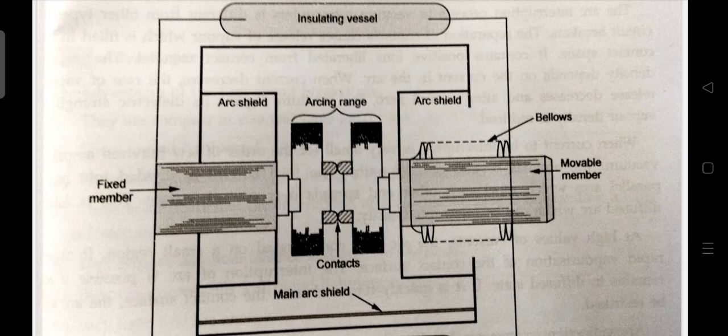Since vacuum has very fast rate of recovery of dielectric strength, the arc extinction in a vacuum breaker occurs with short contact separations like 0.625 cm. It has so many advantages like they are compact, reliable and have longer life. There are no fire hazards. They have low arc energy. They can successfully withstand lightning surges. There is no generation of gas during and after operation. They require very little maintenance and are quiet in operation. They can interrupt any fault current. They have low inertia and hence require small power for control mechanism.